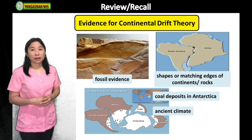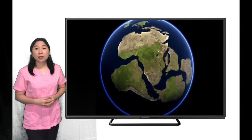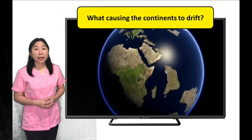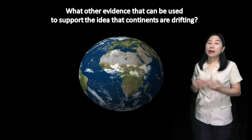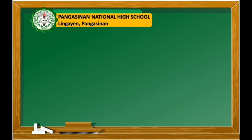Despite this evidence, the Continental Drift Theory was still rejected during Wegener's time because he couldn't explain what was causing the continents to drift. What other evidence can be used to support the idea that continents are drifting? Let's find out in today's lesson: Seafloor Spreading.